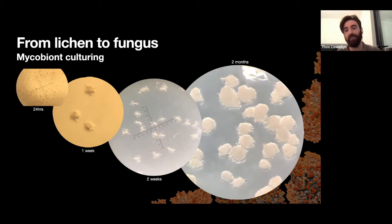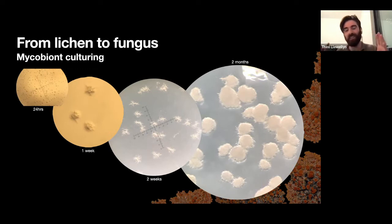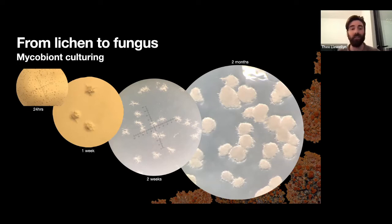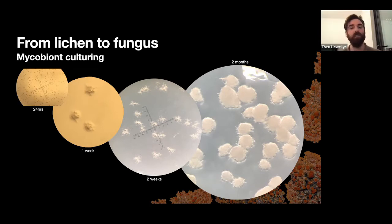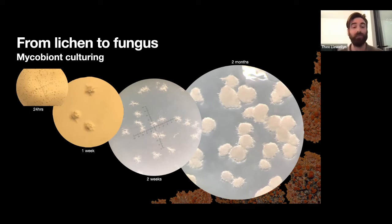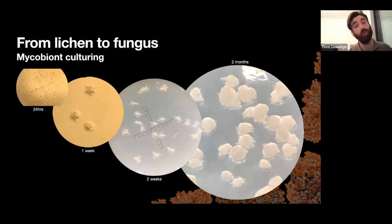To get to this stage takes about two months of lab work. But don't be fooled — these colonies are only about a millimeter across. To get enough material to actually sequence, it can sometimes take up to a year. Some colleagues have noted growth of about one centimeter a year in these cultures. If you're trying to sequence across hundreds or thousands of species, you can see just how much work this takes. And many species of lichens simply refuse to be cultured — especially rock-dwelling ones — so it's not a method that works for all lichens.